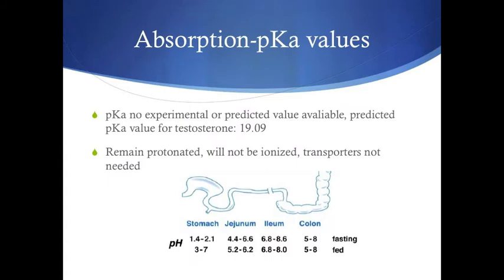There are no experimental or predicted pKa values for the alcohol group on Dianabol. However, the predicted pKa value for the alcohol group on testosterone is 19.09. Assuming that Dianabol would have a similar pKa value, we can compare 19.09 to the various pH levels seen in the stomach and GI tract. After comparison, it is apparent that the pH will never be larger than the pKa. Therefore, Dianabol will remain protonated and will not be ionized, and transporters will not have to facilitate diffusion.